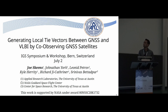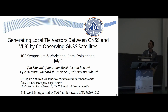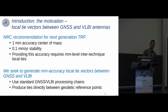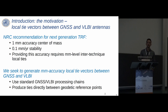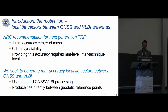Hello, my name is Joe Steens. I'm a grad student at the University of Texas at Austin. I'm going to talk about generating local tie vectors in a unique way by co-observing GNSS satellites between a GNSS antenna and a VLBI radio telescope. This is a collaboration with NASA's Goddard Space Flight Center.